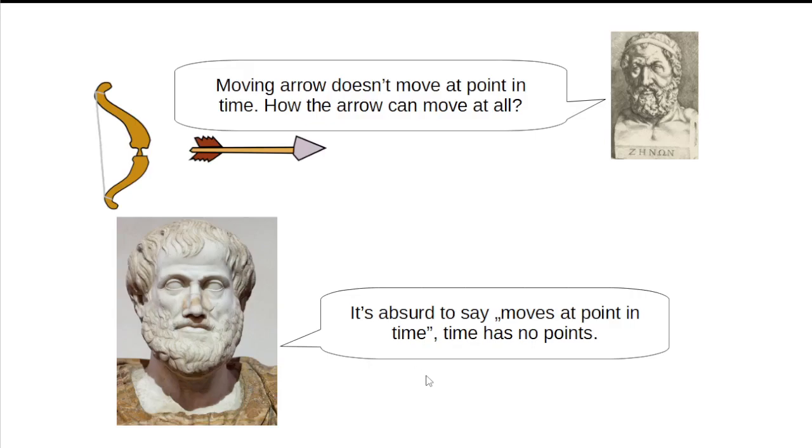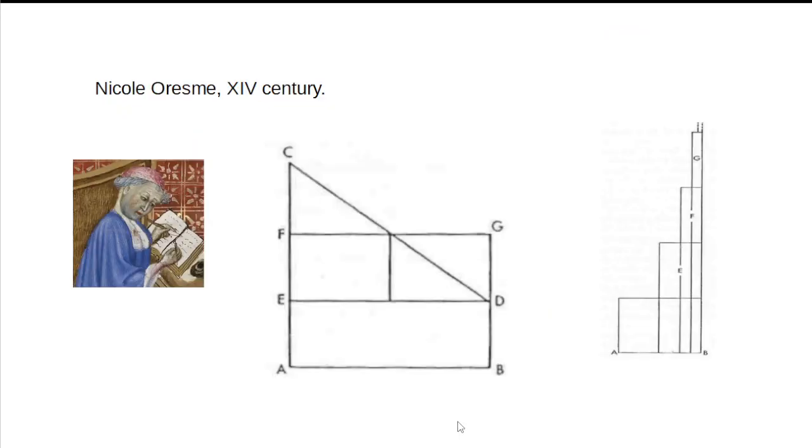Scholastics understand measurement of time as analogy among durations of changes in the real world. In this way, they can conceive instantaneous velocity and rates of changes of any other quantity. Another 14th century scholar, Nicole Oresme, introduces very simple graphical integral calculus and applies it to the description of motion. He demonstrates that average velocity in accelerated motion is arithmetic mean of initial and final velocity.